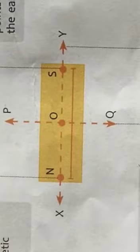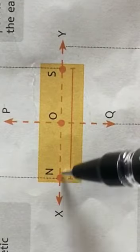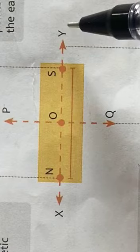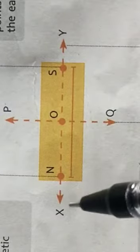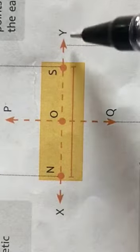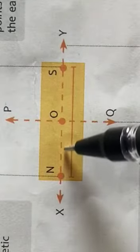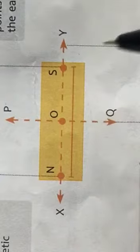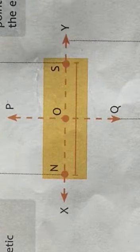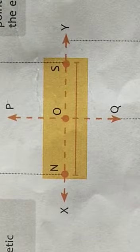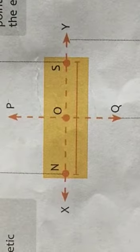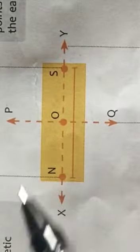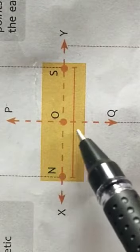This imaginary line XY that passes through the magnetic north pole and magnetic south pole of the bar magnet is called the magnetic axis. Then comes the magnetic equator — here children you can see this imaginary line PQ.